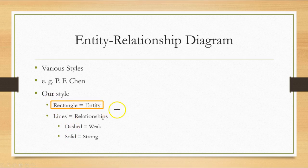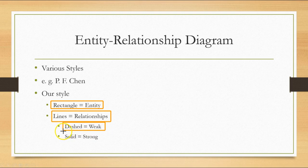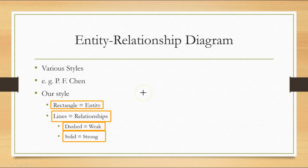Rectangles are entities. Lines between the entities indicate relationships. A dashed line means it is a weak relationship — meaning the other entity does not have to exist. And a solid line means it's a strong relationship — meaning the other entity must exist for the relationship to be built.